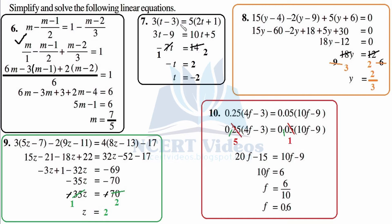In the first step, let's open the bracket since we cannot see any other step right now. So 3 times t gives us 3t, minus 3 times 3 is 9. Equal to as it is: 5 times 2t is 10t, plus 5 times 1 is 5. Our bracket is open. Now let's separate our variables. 3t we have on the left-hand side; 10t is positive on the right-hand side. When we transpose it towards the left-hand side its sign changes to minus 10t. So 3t minus 10t — different signs, subtract — gives minus 7t. Equals 5, and when we transpose minus 9 it adds up: 5 plus 9 gives 14.